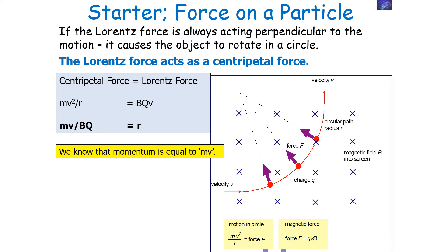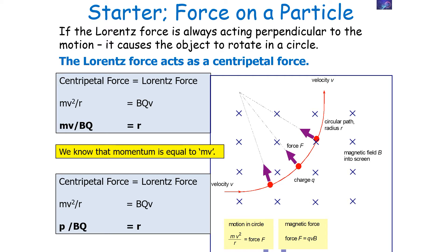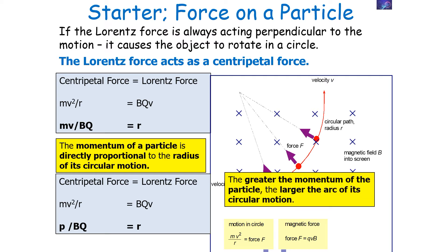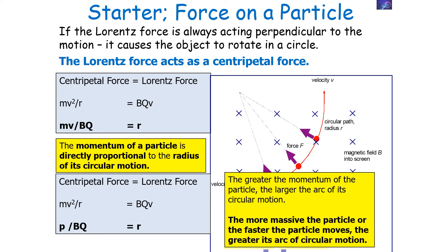We know that momentum p is equal to mv, so r is equal to p / Bq. This tells us that the momentum of a particle is directly proportional to the radius of its circular motion. So the greater the momentum of the particle, the larger the arc of circular motion and the larger the radius of deflection.